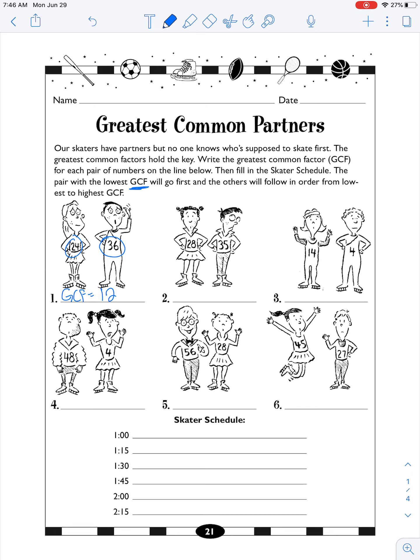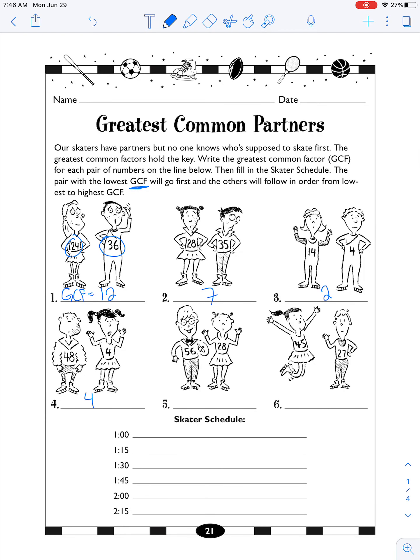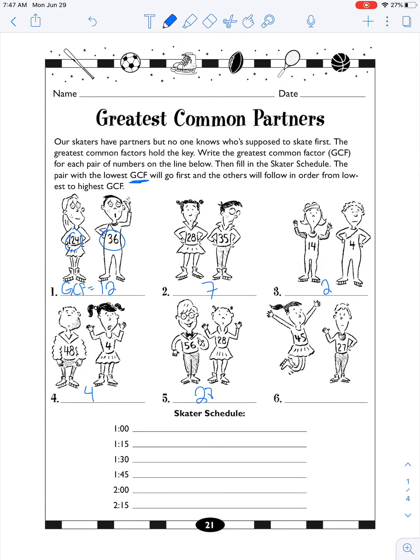So the GCF of this one is 12, right? 12 times 2 and then 12 times 3. Between 28 and 35, it's 7. Between 14 and 4, it's going to be 2. Between 48 and 4, it's going to be 4. Between 56 and 28, this is a hard one, it actually is 28 because 28 times 2 is 56.